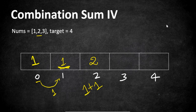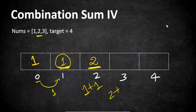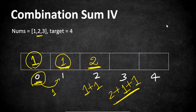Now for target 3, it will get clear. With value 1 in hand, the rest needed is 2 — at position 2 the possible combinations are 2, so we add 2. Moving on to value 2: the rest needed is 1 — at position 1 the combinations are 1, so we add 1. Moving on to value 3: the rest needed is 0, and at position 0 the combination is 1, so we add 1. Overall we get 4 combinations for target 3.